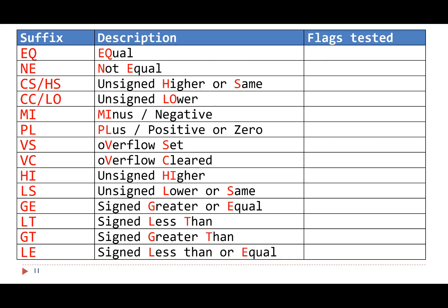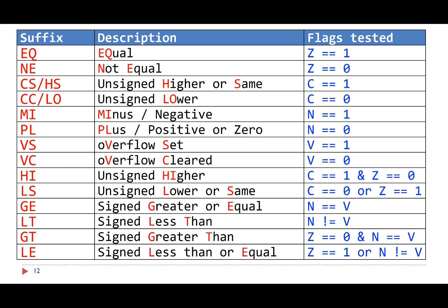How does the processor use NGCV bit flags in the program status register PSR to test whether a condition is satisfied? This table summarizes the answers. For example, the processor checks whether the Z flag is set or clear to test the conditions equal and not equal. If Z is 1, the result of the comparison — that is, the result of subtraction — is 0, meaning the operands are equal. If Z is 0, the result of subtraction is non-zero, so the operands are not equal.